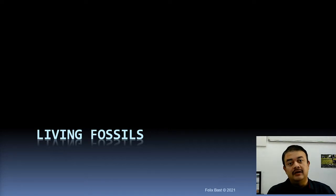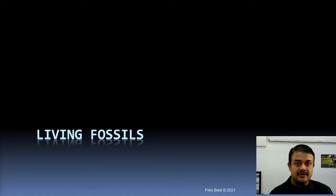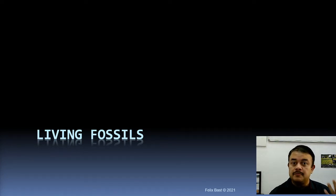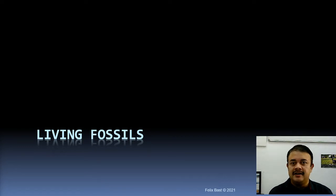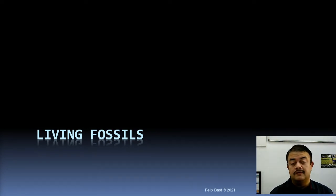You might have heard the term 'living fossil.' It refers to a living organism whose species is very old — the origin of that species goes back millions of years, usually around 10 million years or more. From the origin of a species to its extinction, most extinction events throughout history have been natural, except in recent times when human activity has caused a large number of extinctions.